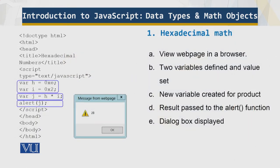So let's look at this web page in a browser. So this is the page, and this is how it will appear. We have two variables defined and the value is set. So we have this variable H over here and the variable I over here.